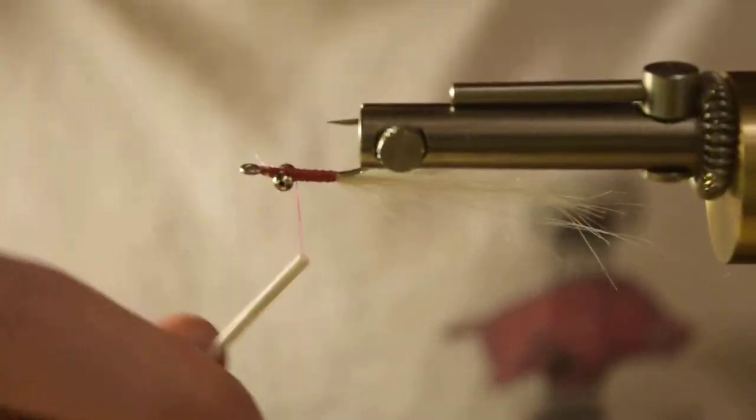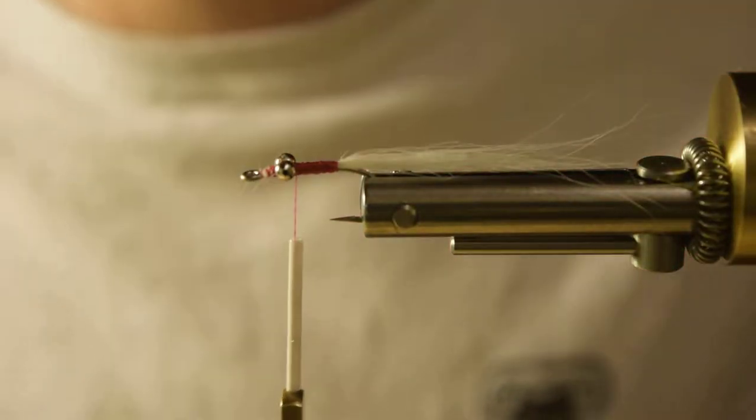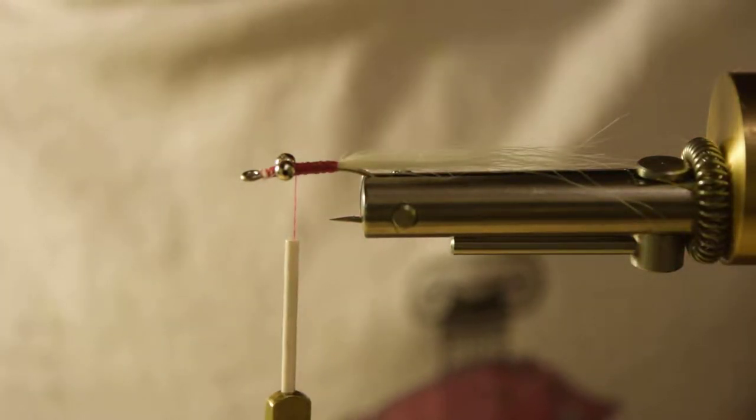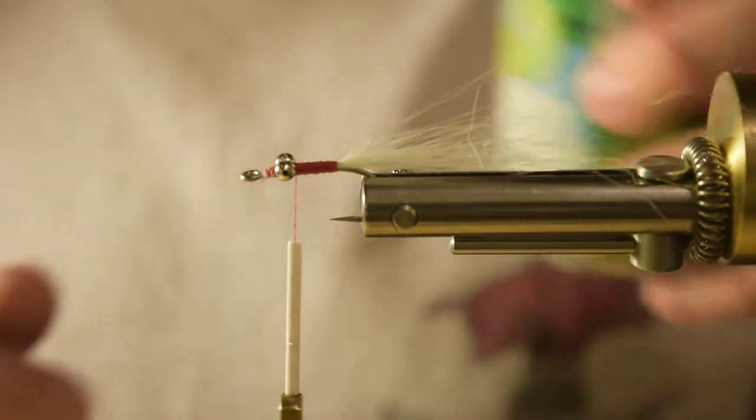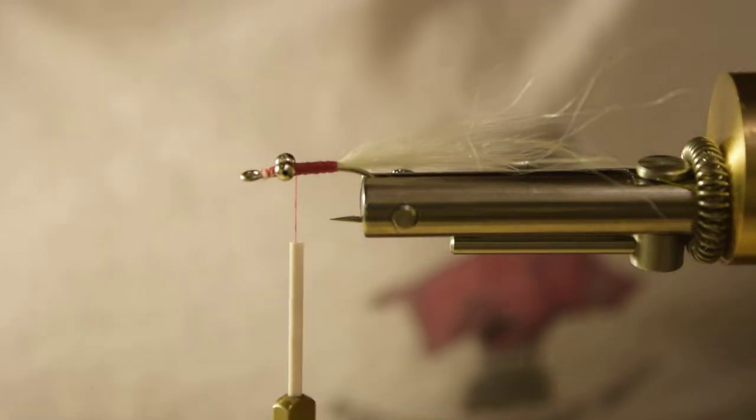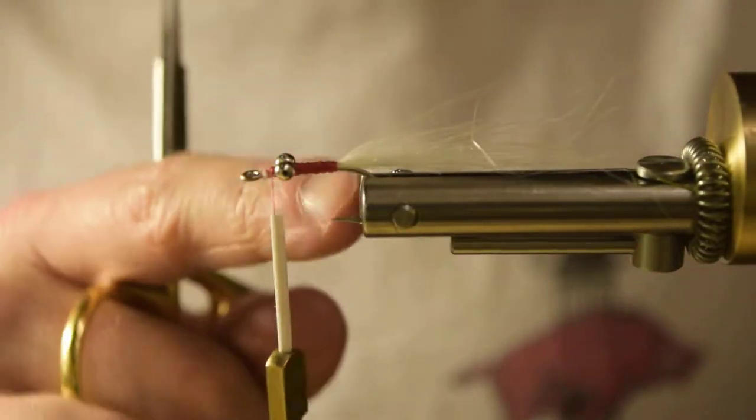If you want to, you can stop right behind the eyes here and not cover it all up like I did there. But it tends to foul up on you and wrap around the hook. So I'll go ahead and tie it down to the hook shank. Now we're going to jump in front of the eyes.